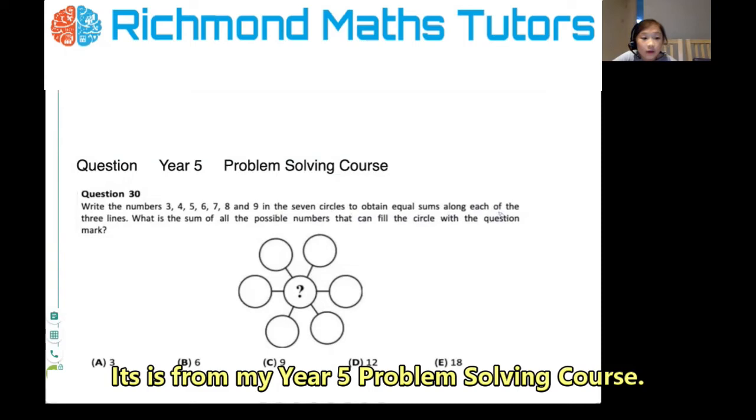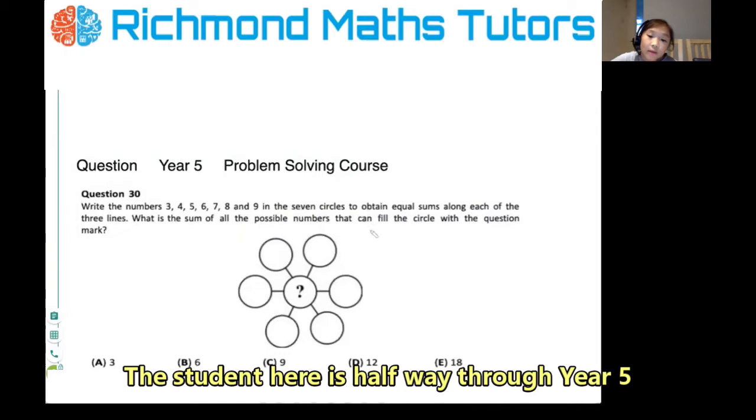What is the sum of all the possible numbers that can fill the circle with the question mark?